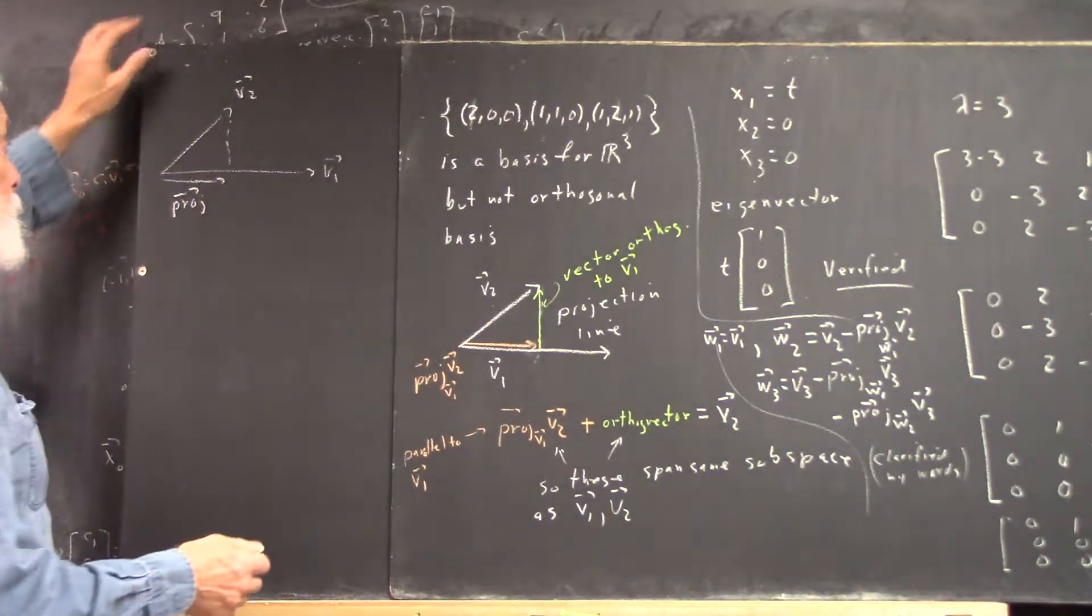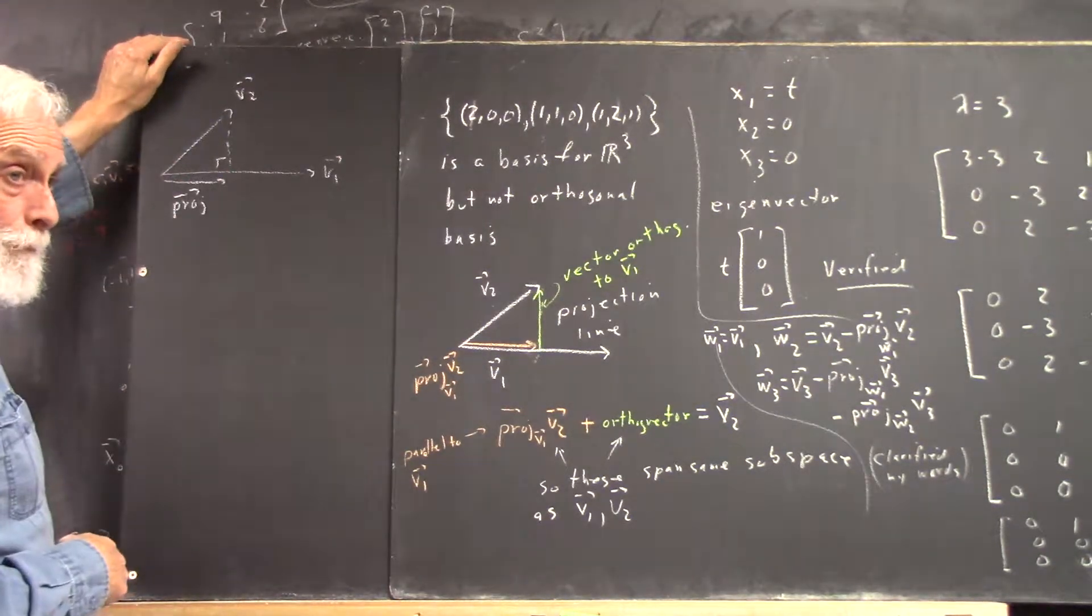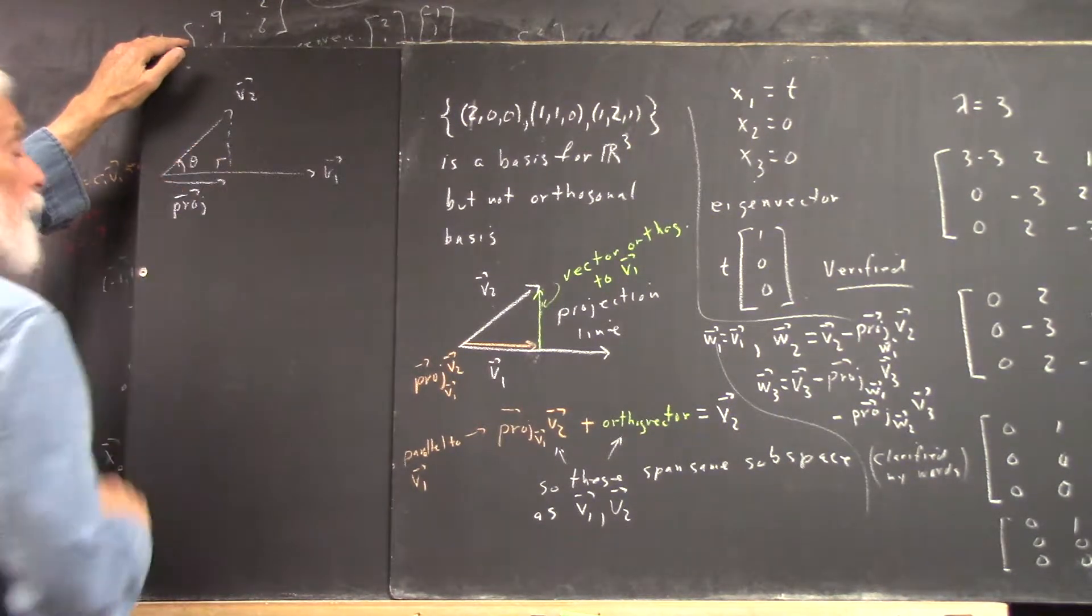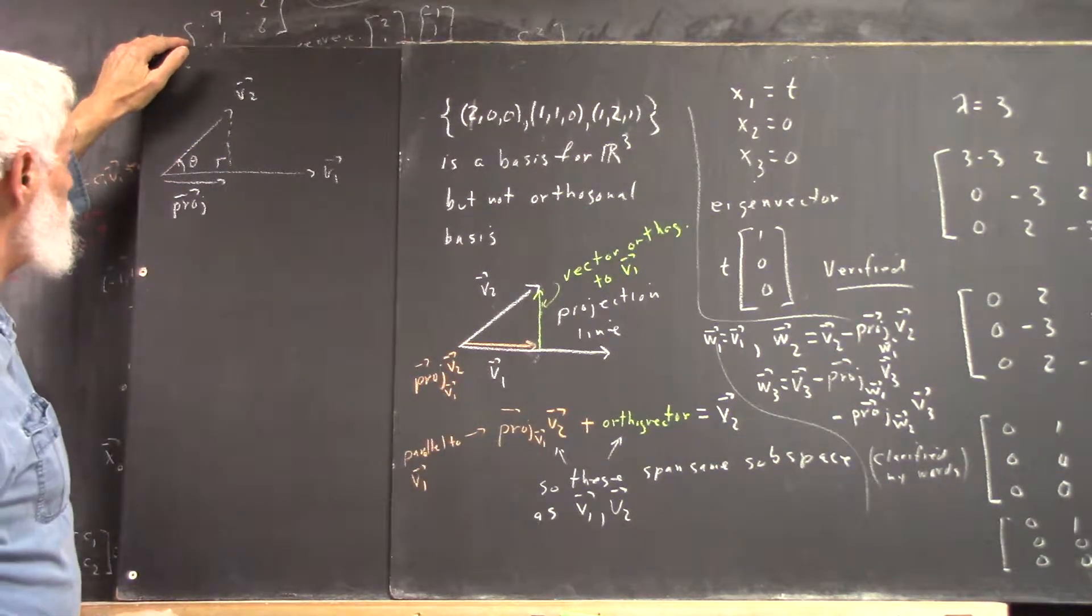What have you got here? You've got a right triangle. Got an angle here.